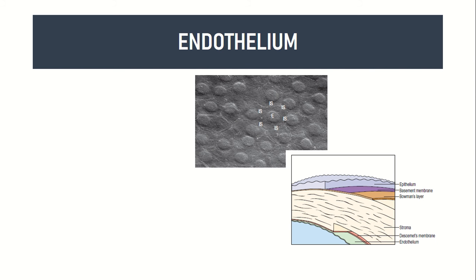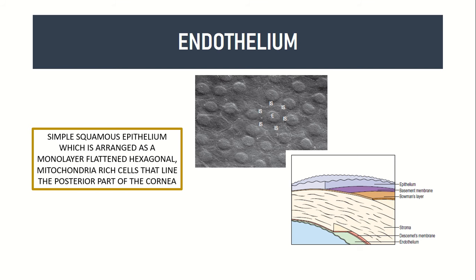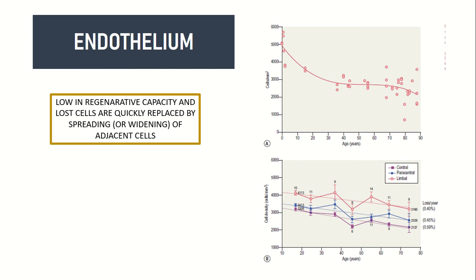Before we go on, some notes on endothelium. It is made of simple squamous epithelium which is arranged as a monolayer of flattened hexagonal mitochondria-rich cells that line the posterior part of the cornea. The high concentration of mitochondria is second highest in the eye, next to the photoreceptors. It is low in regenerative capacity. When there is loss of cells, the area is replaced by spreading or widening of adjacent cells.